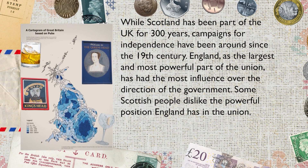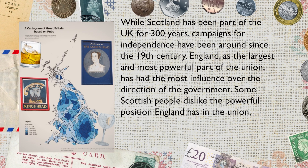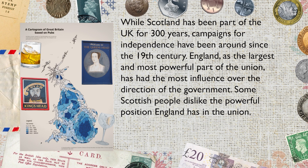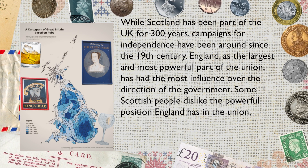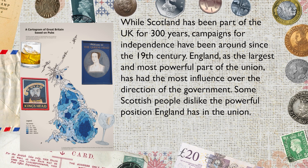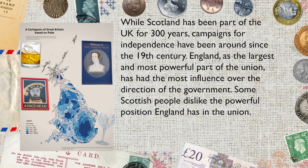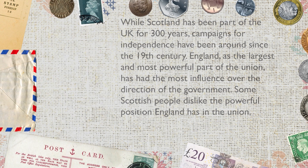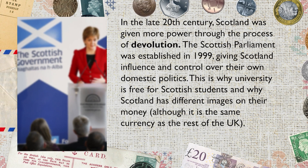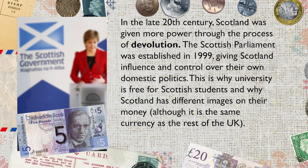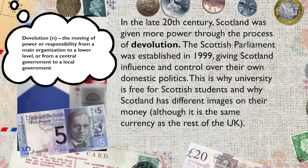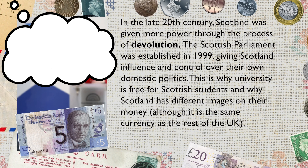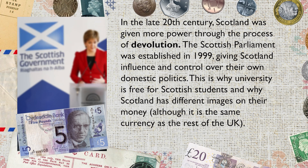While Scotland has been part of the UK for 300 years, campaigns for independence have been around since the 19th century. England, as the largest and most powerful part of the Union, has had the most influence over the direction of government, and some Scottish people dislike this. In the late 20th century, Scotland was given more power through a process known as devolution. The Scottish Parliament was established in 1999, giving Scotland influence and control over their own domestic politics. This is why university is free for Scottish students but not for English students.